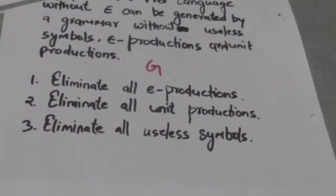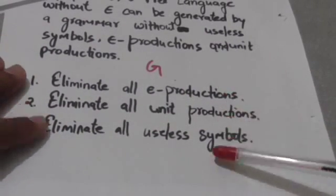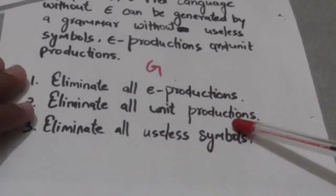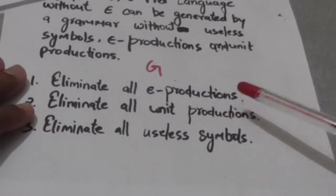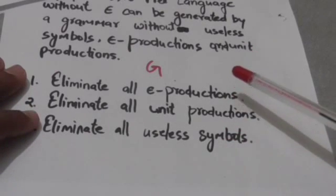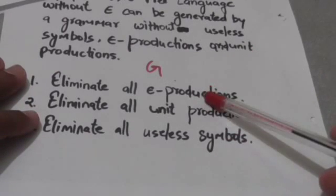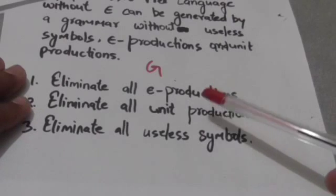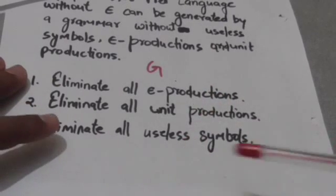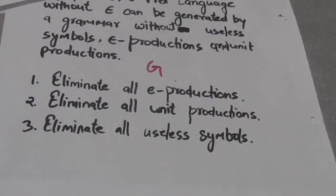If we do not perform elimination in this order, we may not get the required grammar. So the correct order is: first eliminate empty productions, then eliminate unit productions, and then eliminate useless symbols from grammar G to get the required grammar.